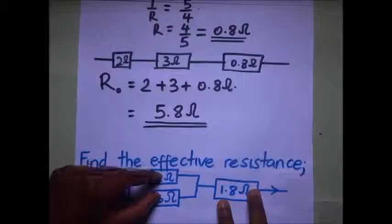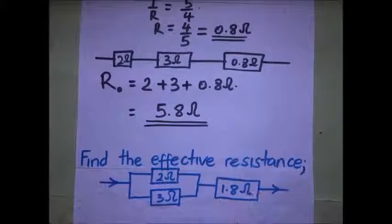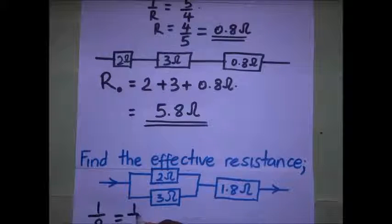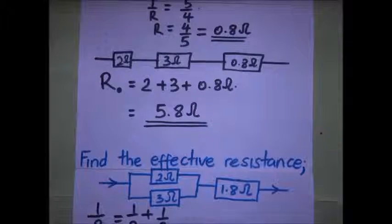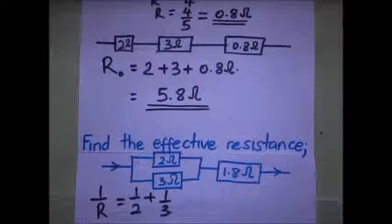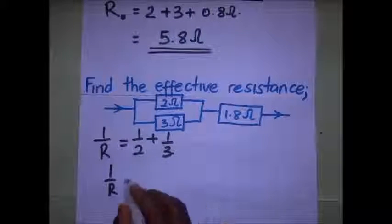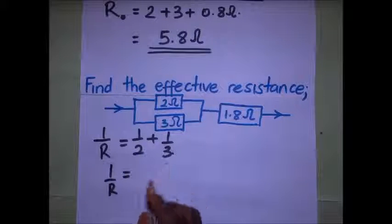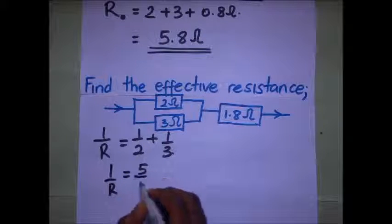Since these two are in parallel, let's first get the effective resistance there. 1 over R is going to be equal to 1 over 2 plus 1 over 3. A half plus a third gives us 5 over 6.